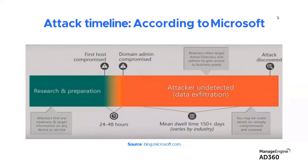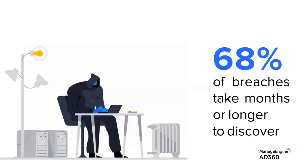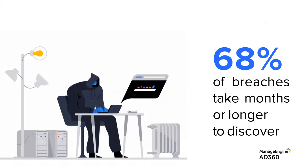This is only half of the problem. There's also data exfiltration that follows account compromise. While your users are working remotely, it is all the more difficult to keep a tab on data flowing in and out of your system. Attackers can effectively camouflage and go under the radar while attacks are happening and they start exfiltrating data.